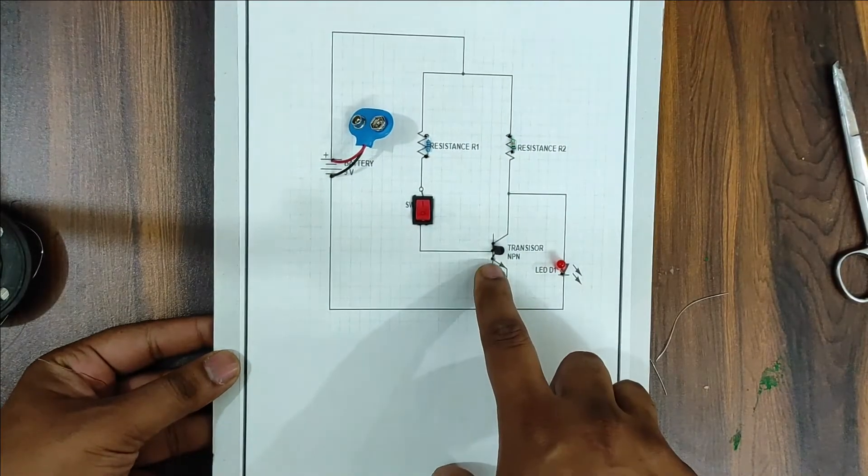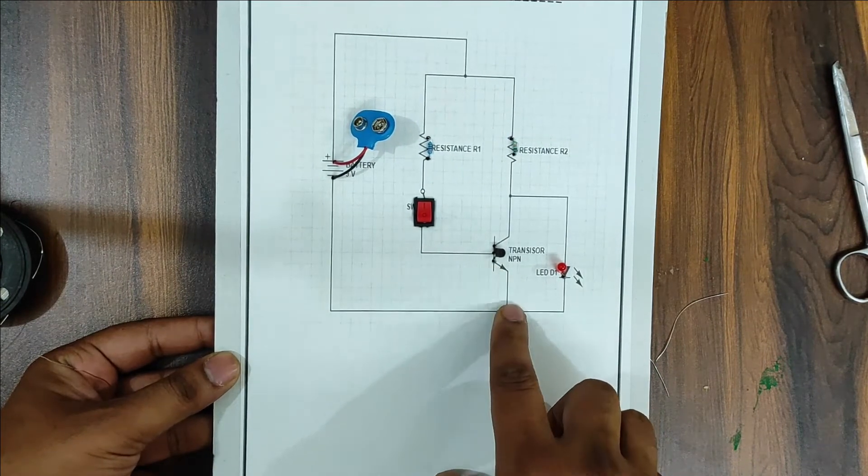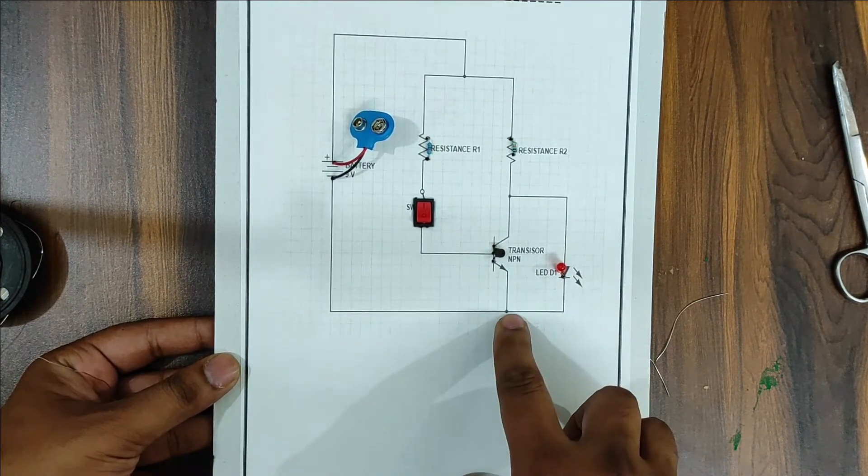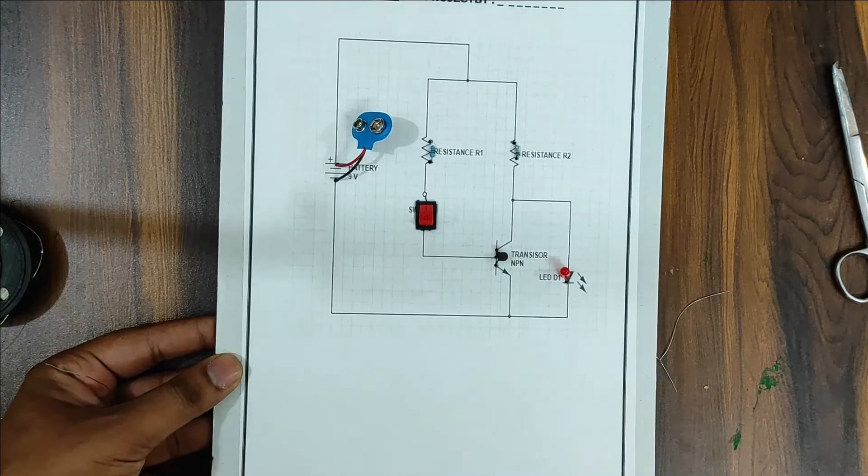Now we have the emitter. The emitter is negative and the battery is negative. These are three points in the opposite direction.